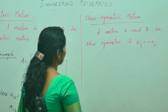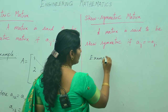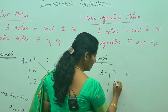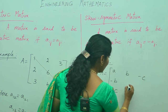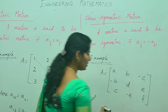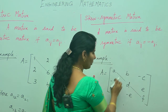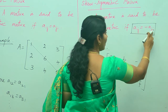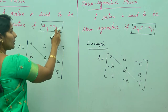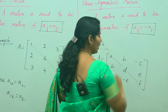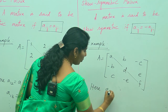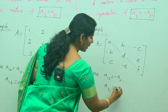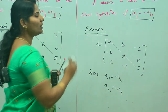For example, take a matrix A with elements A, B, C, -B, D, E, -C, -E, F. You can see that except the diagonal elements, B equals minus B. The condition is A_ij equals minus A_ji — the reverse of symmetric matrix, just with negative signs. Therefore A_12 equals minus A_21, and A_31 equals minus A_13, and so on. This is skew symmetric.